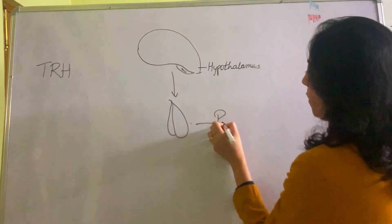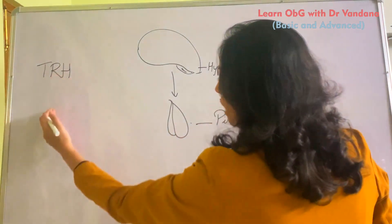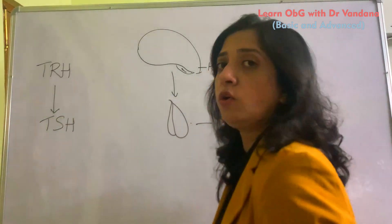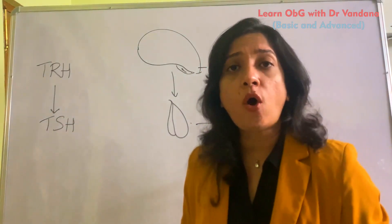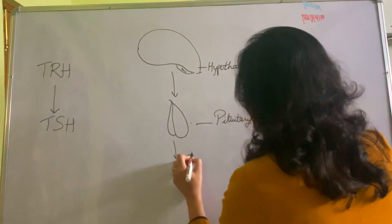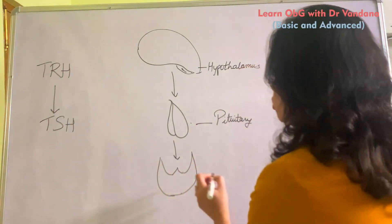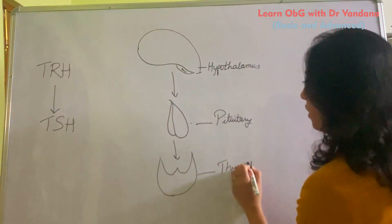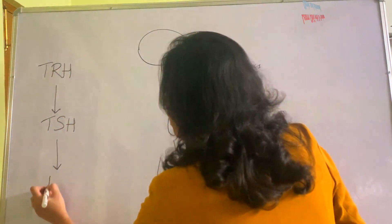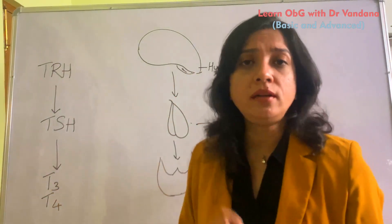There are two parts of the pituitary. The anterior pituitary produces a hormone called thyrotropin, also called TSH or thyroid stimulating hormone. It acts on our thyroid gland, which is situated in the anterior part of the neck. From the thyroid gland, there are two important hormones: T3 and T4. Both are iodine-containing hormones.